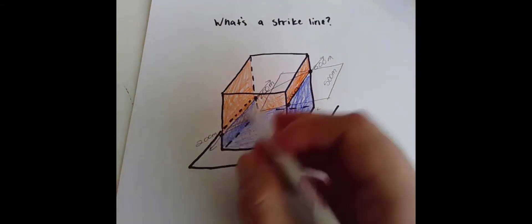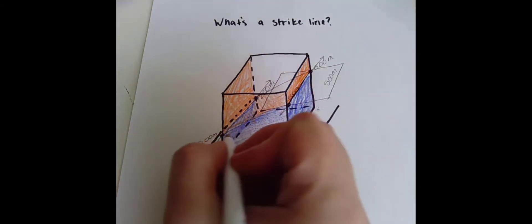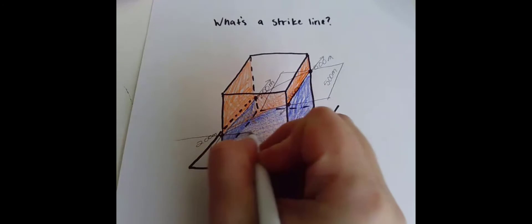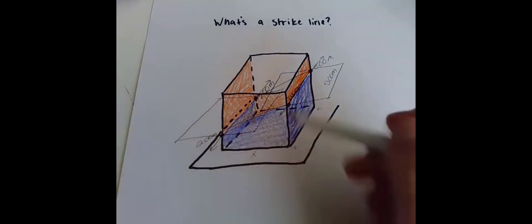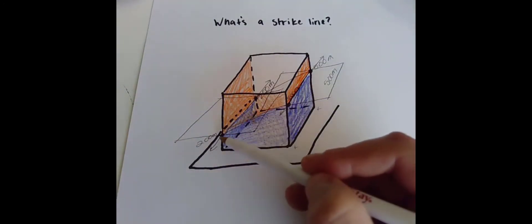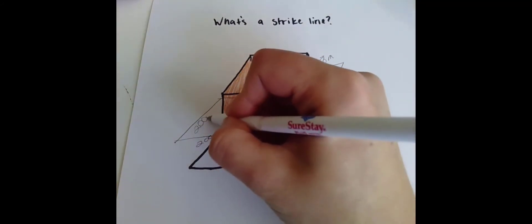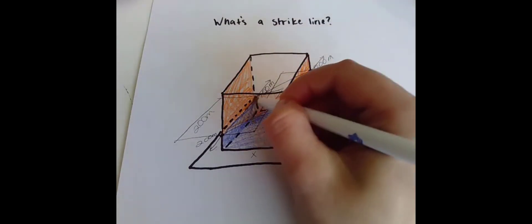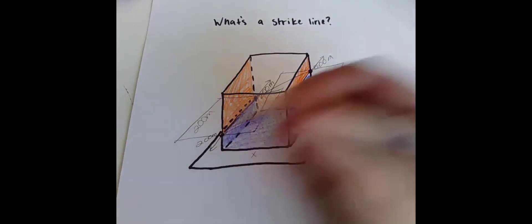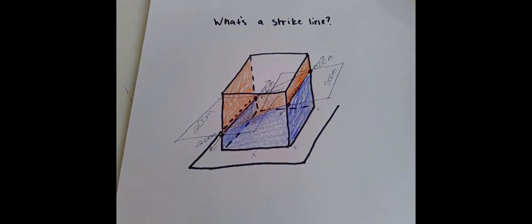And the same thing happens down here. If I made a horizontal plane and I let that horizontal plane intersect that orange blue contact, then the 200 meter elevation plane would intersect at this line, making that the 200 meter strike line.